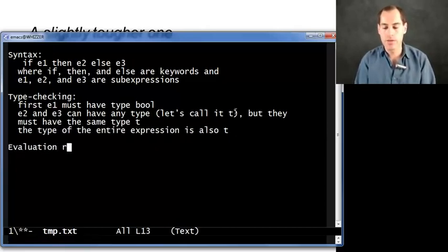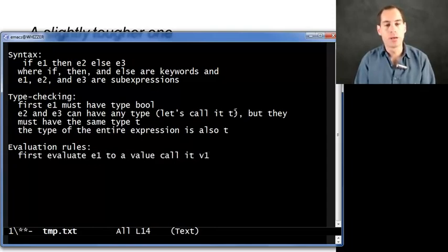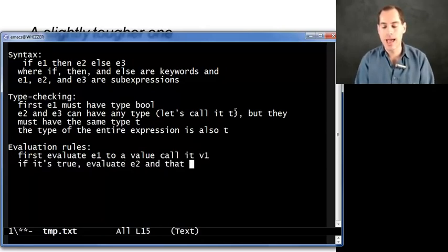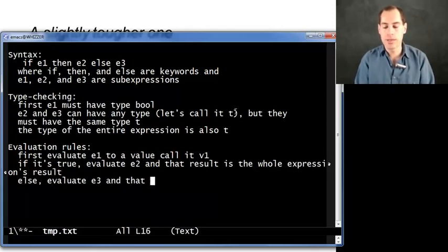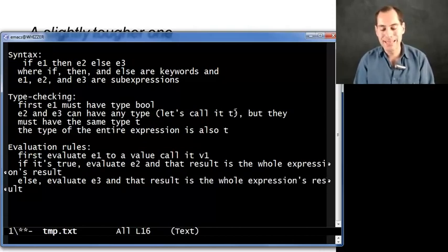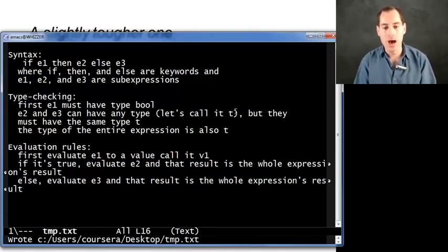And last, we have the evaluation rules. And here we first evaluate E1 to a value, call it V1. Since it type checked with type bool, I actually know that V1 will be true or false. If it's true, evaluate E2, and that result is the whole expression's result. Else, evaluate E3, and that result is the whole expression's result. And that is everything there is to know about the syntax, type checking rules, and evaluation rules of an if expression.